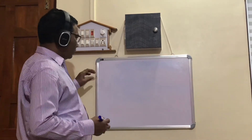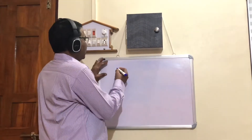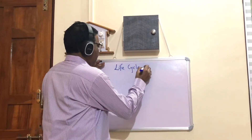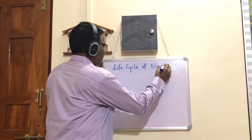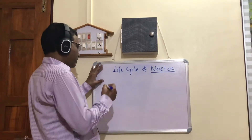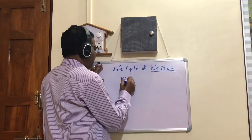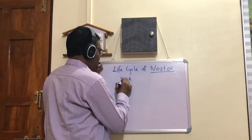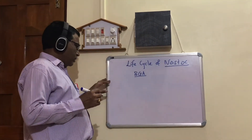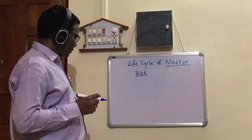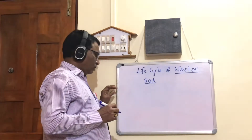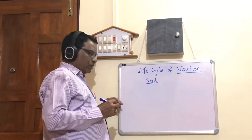Today we are going to study a new topic: the Life Cycle of Nostoc. This Nostoc is a very common colonial blue-green alga. In this life cycle study, we have to cover taxonomic position, occurrence, thallus structure, reproduction, and the graphic cycle.